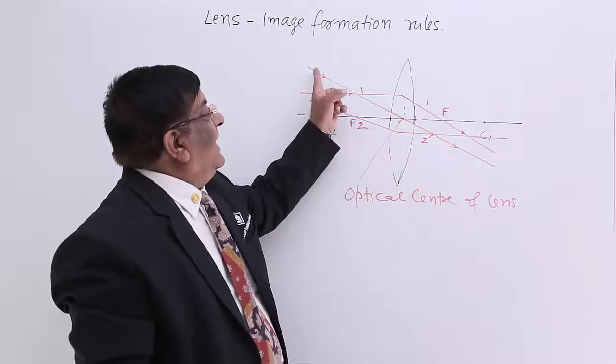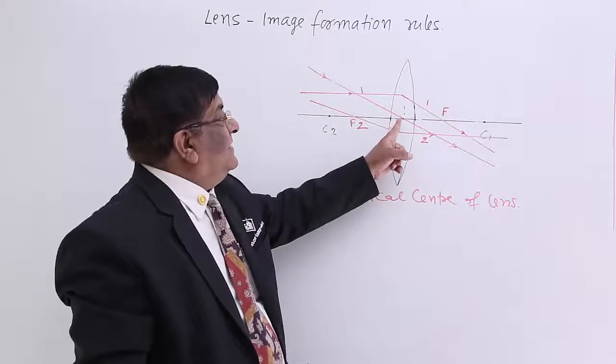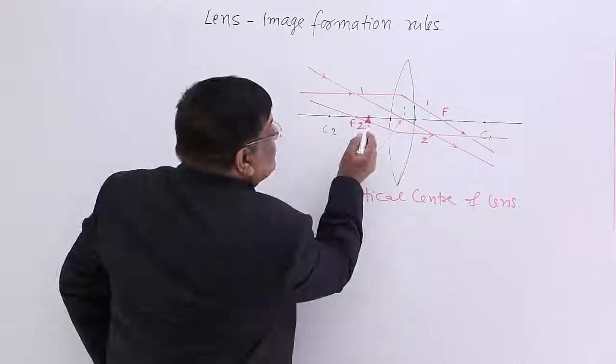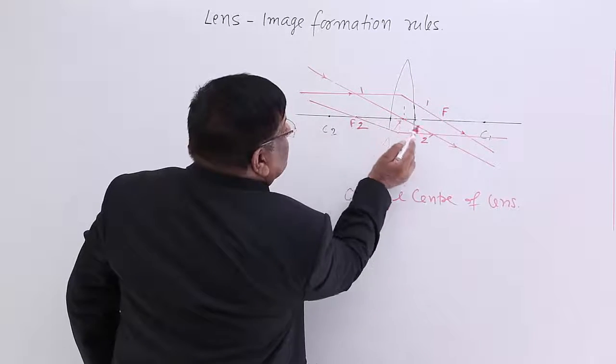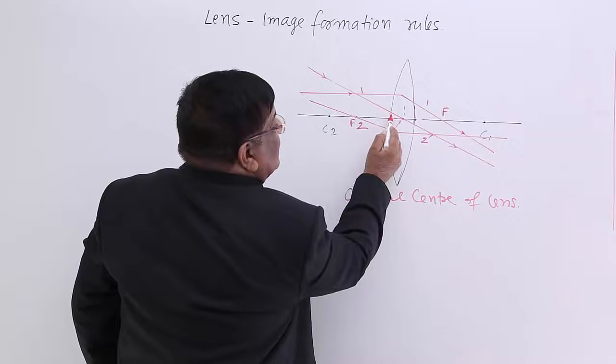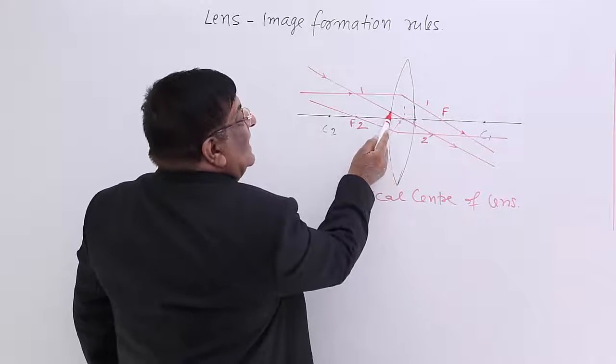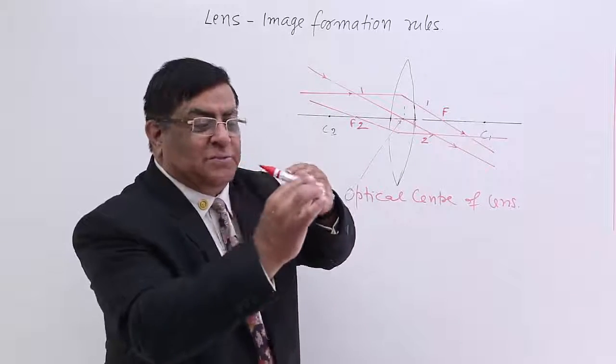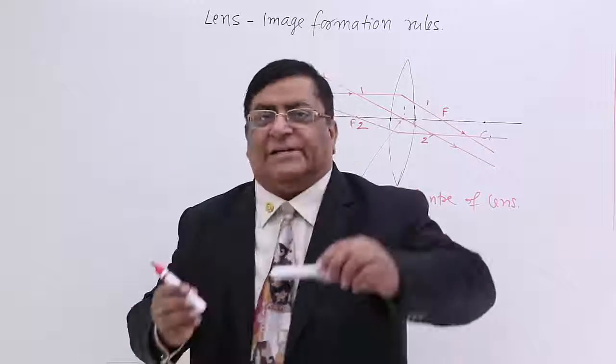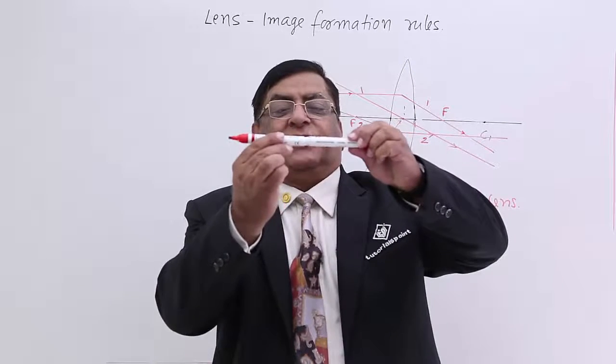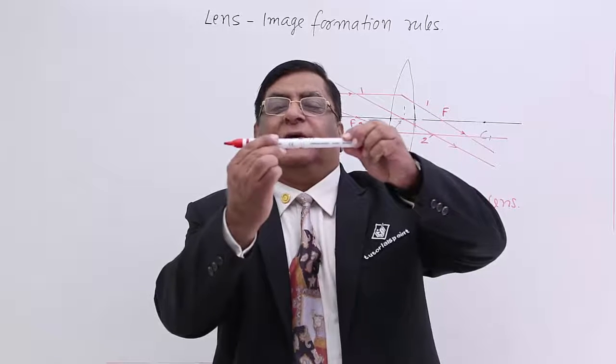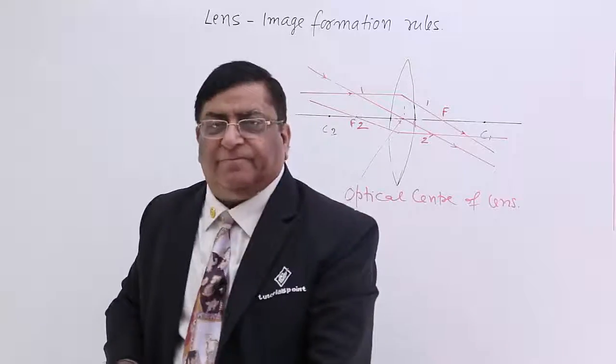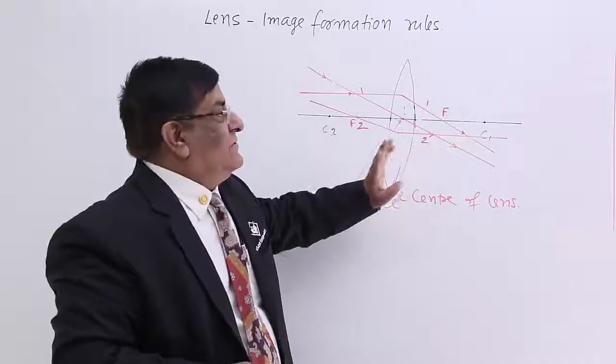Third, which is directed towards optical center will go undeviated. In fact, if we see it very minutely, there is a slightly lateral displacement between the two because this is a slab. But that lateral displacement is so small that we can say this is the straight line. This is very small, so we can take it as straight line for the larger derivations.